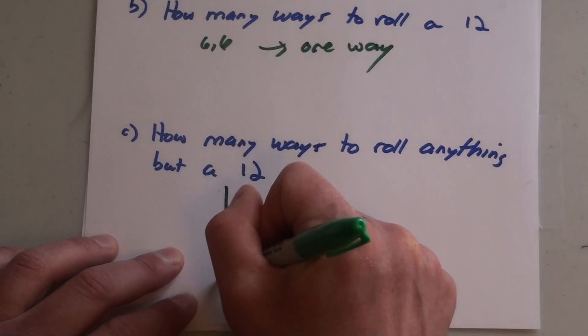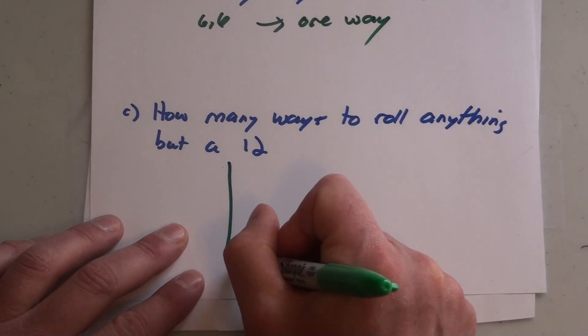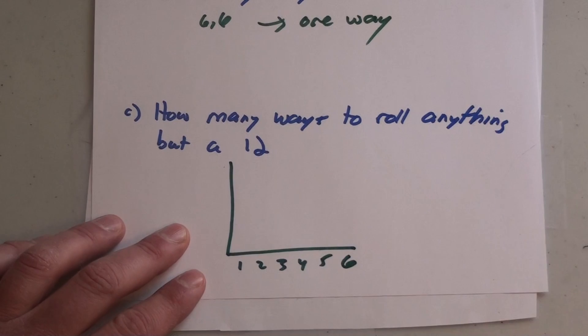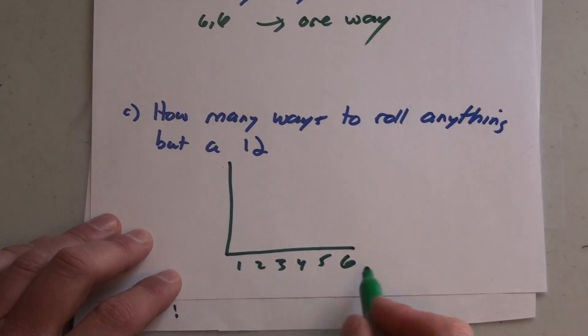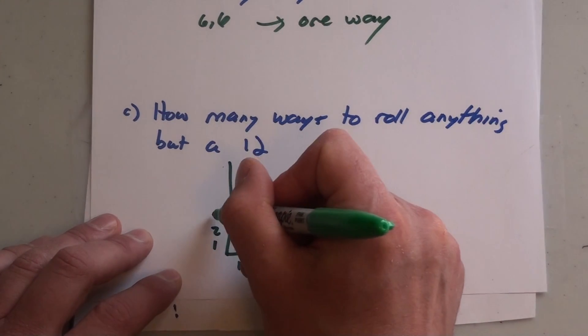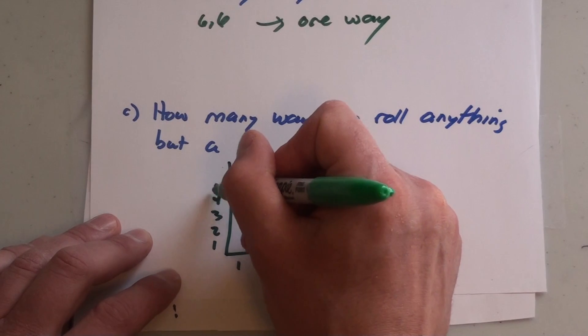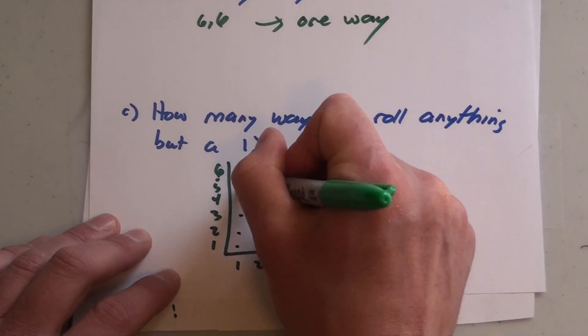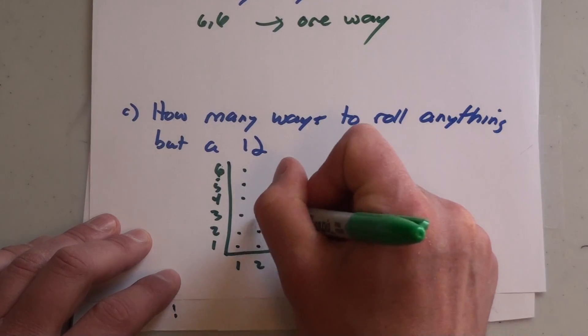We know there's one way to roll 12, but how many ways are there to roll anything but a 12? If you do a two-dimensional grid where you have the outcomes of the first dice on the horizontal, outcomes of the second dice on the vertical, and then you have dots representing each different scenario of the two dice being rolled...